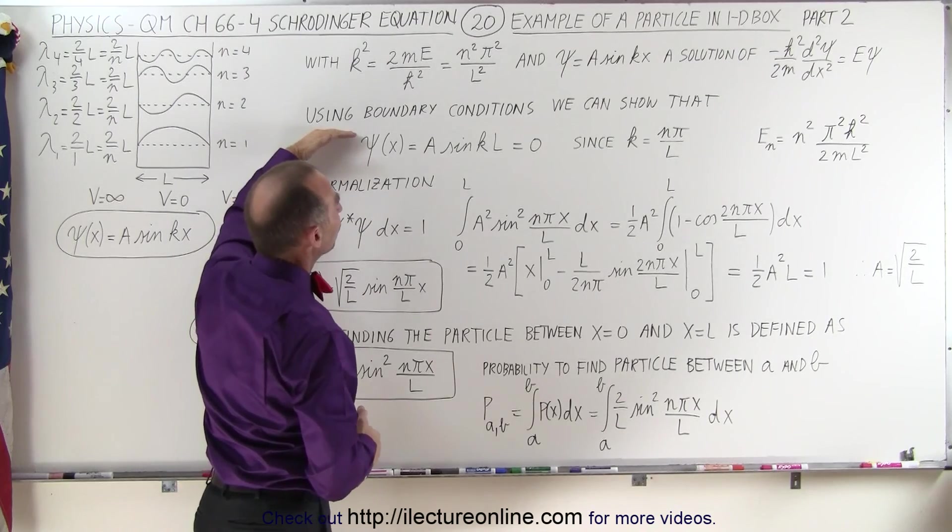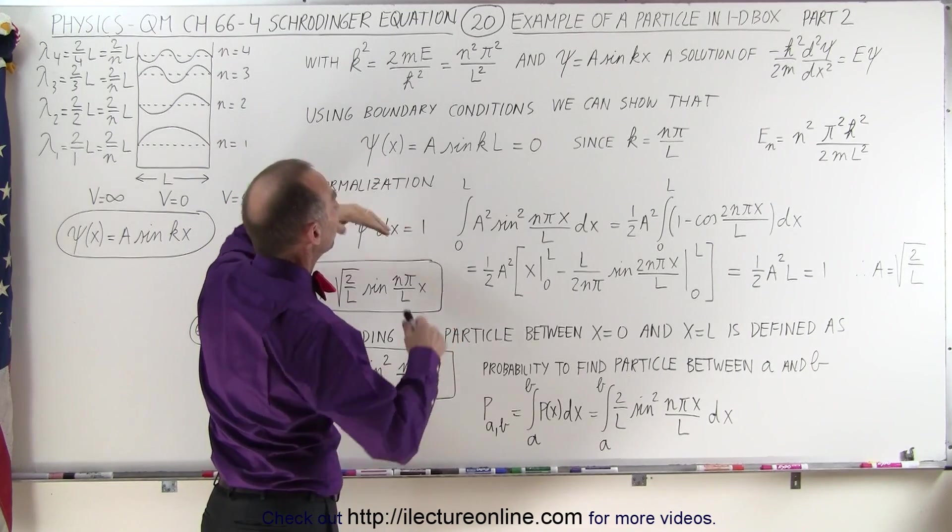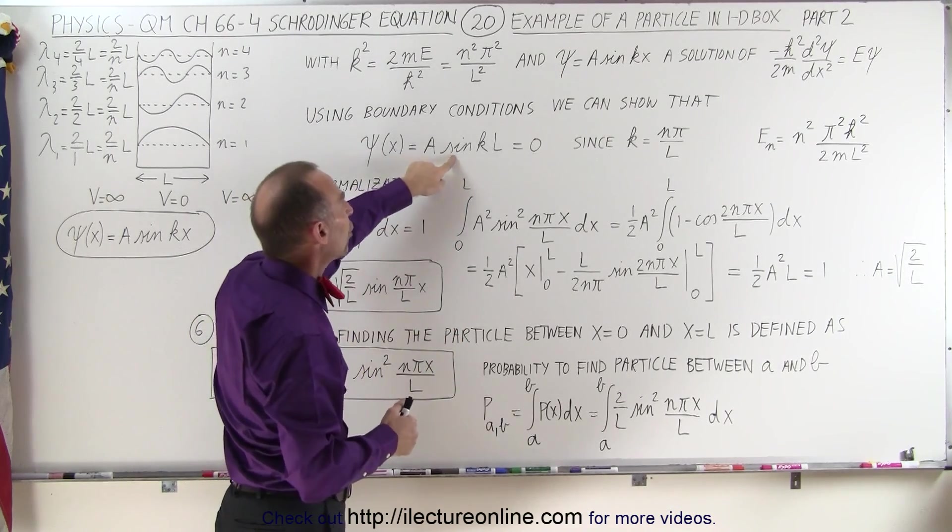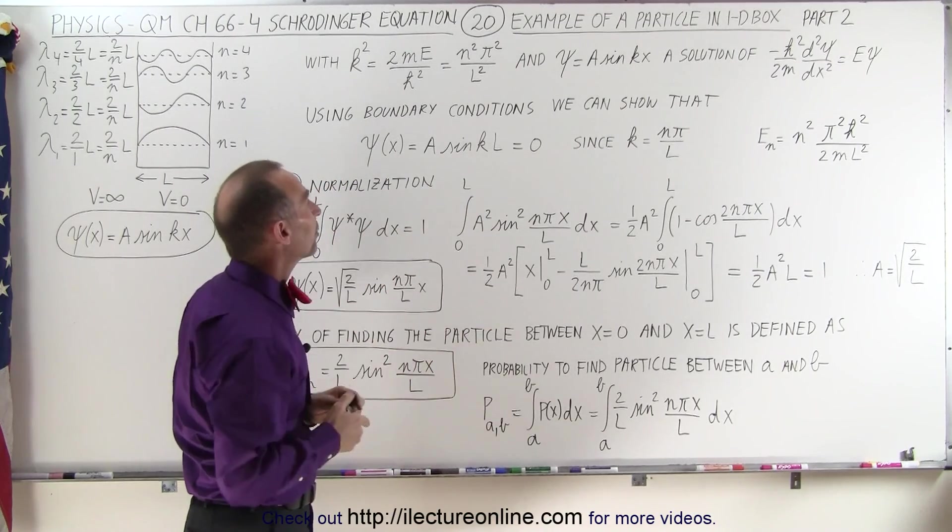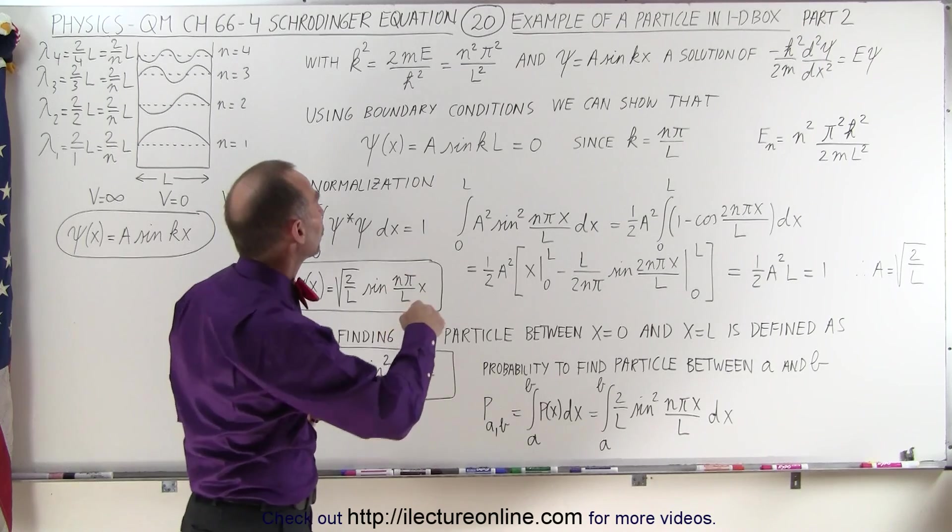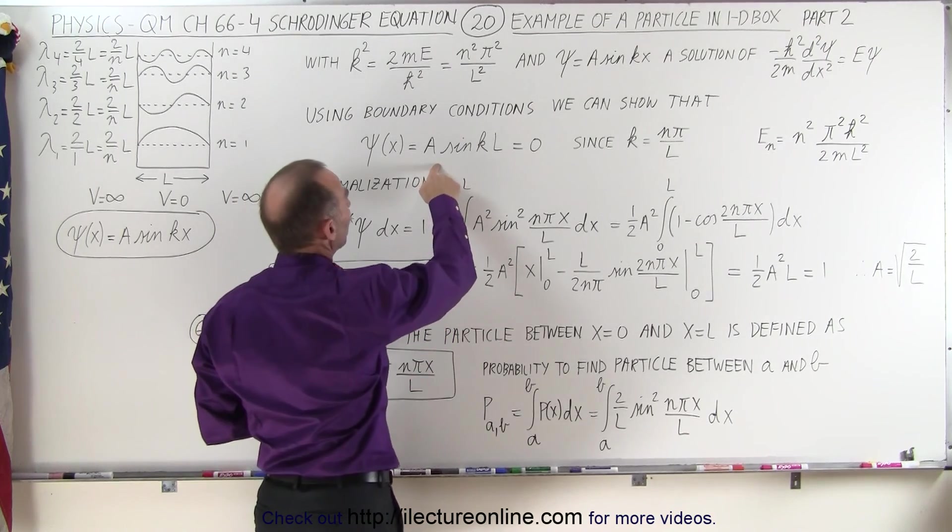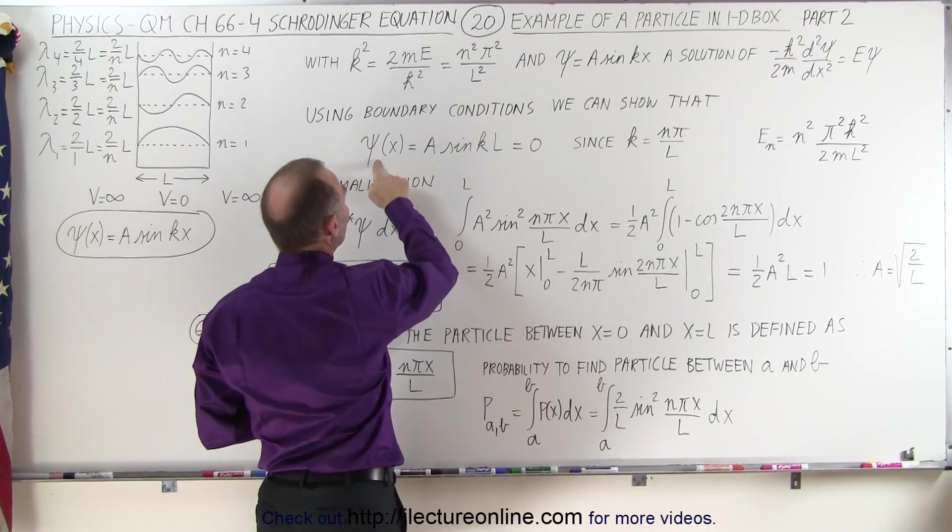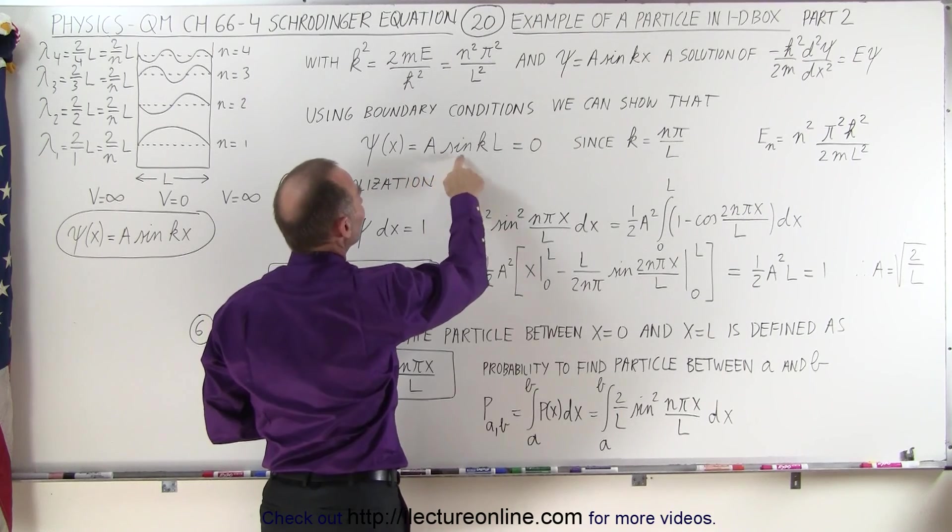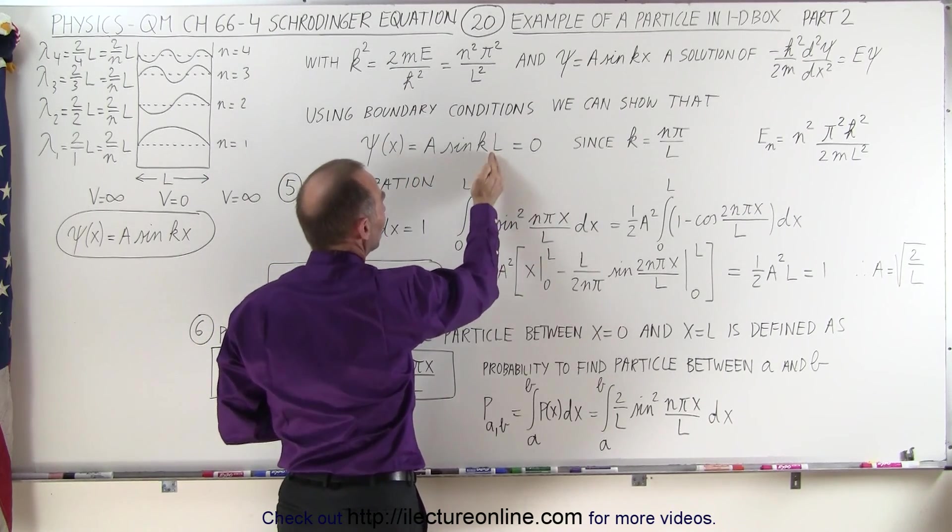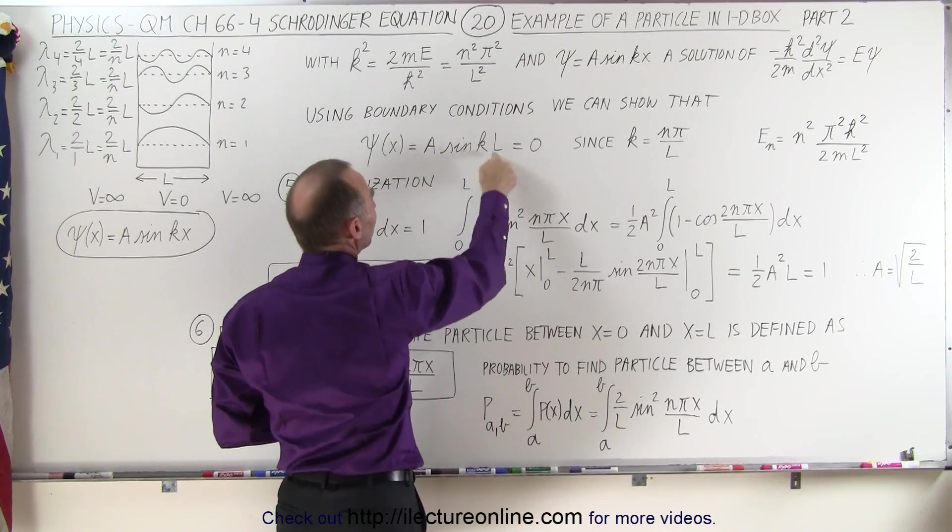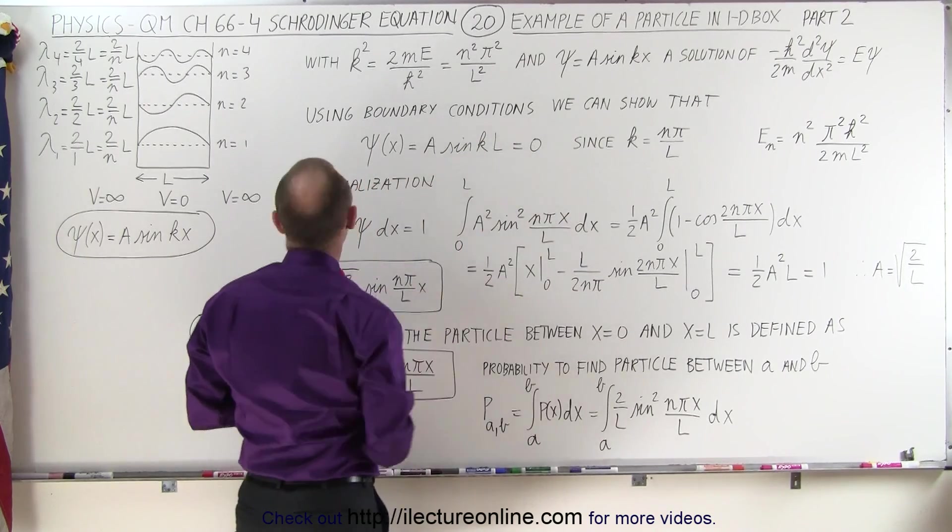We used the boundary conditions so that we could show that this possible solution of a times the cosine of kx was not possible because it did not meet the boundary conditions. And we were also able to show that if we then plug the boundary conditions into the wave function being equal to a times the sine of kx, for example, when x is equal to zero or x is equal to l, this function does indeed become zero.